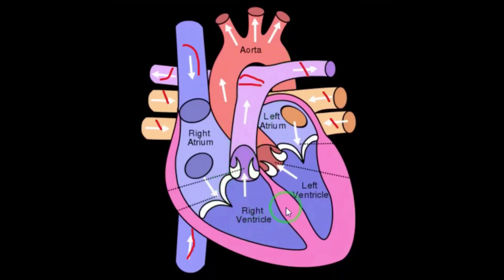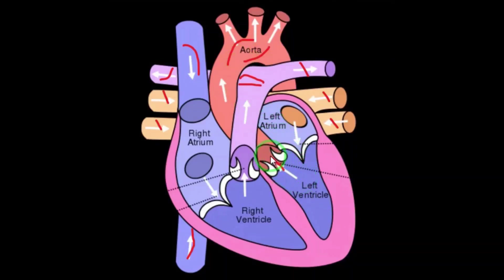The left ventricle gives rise to the aorta, which carries oxygenated blood to the different parts of the body. In this way the heart works to circulate blood throughout the body.